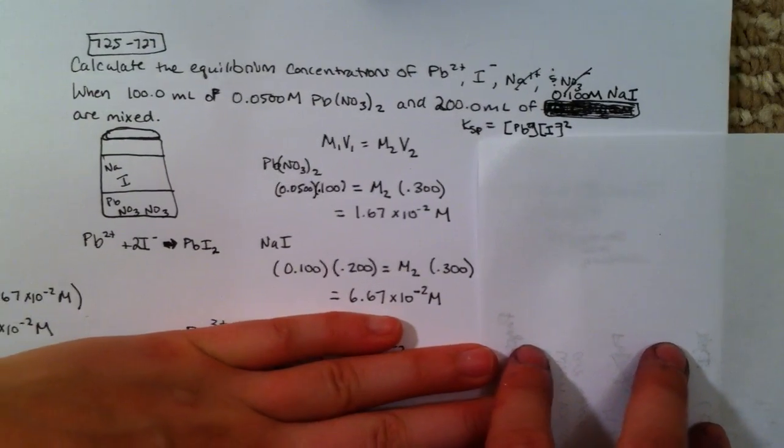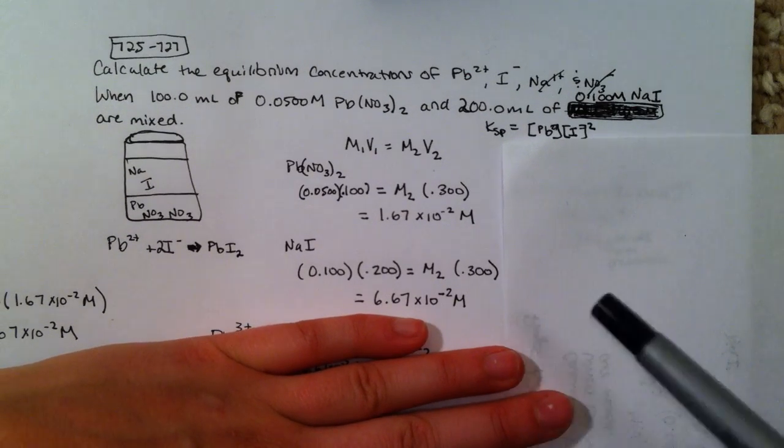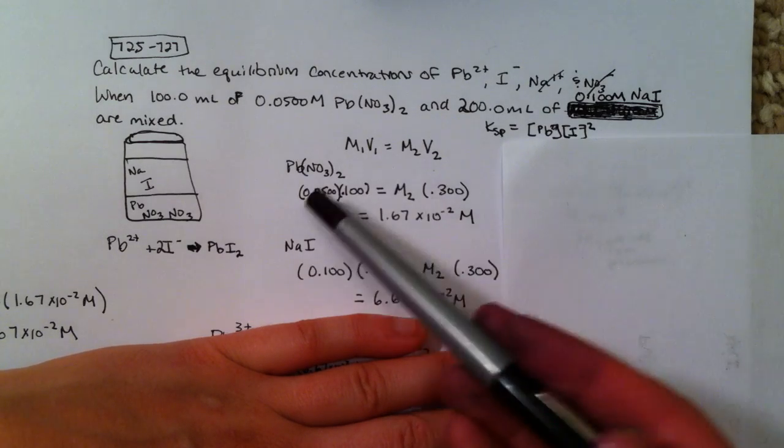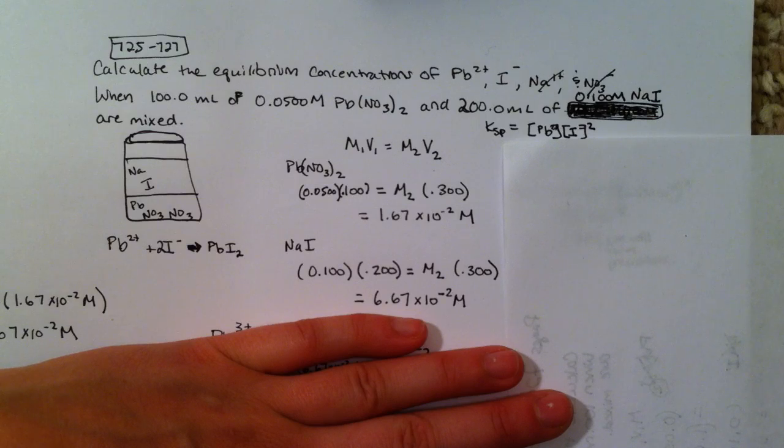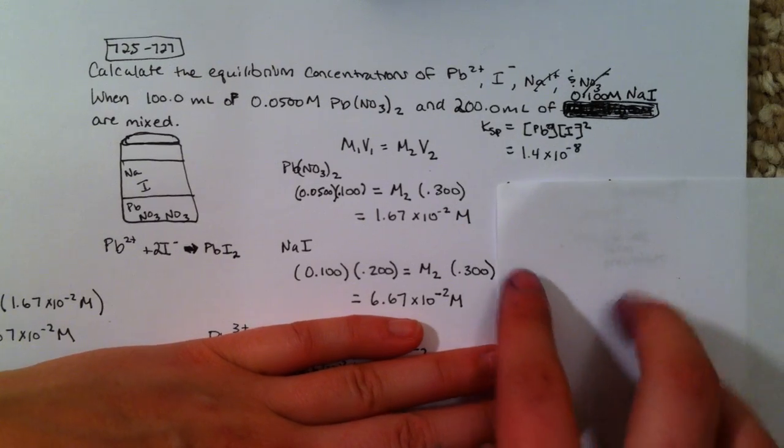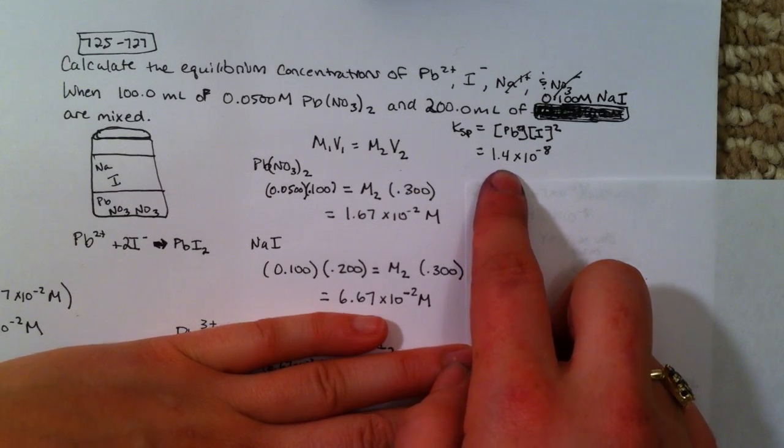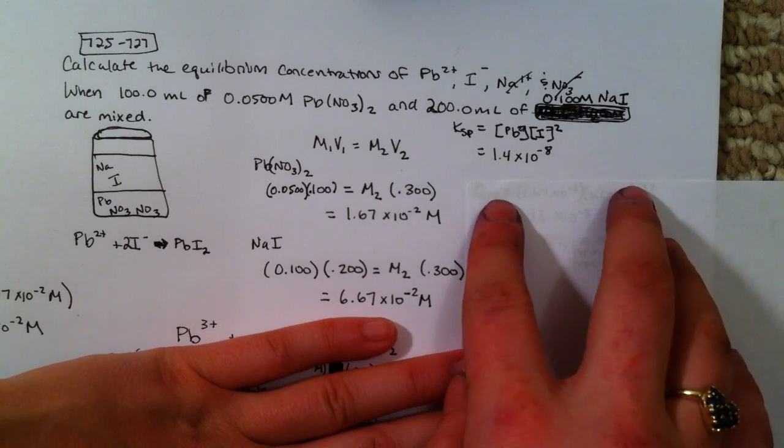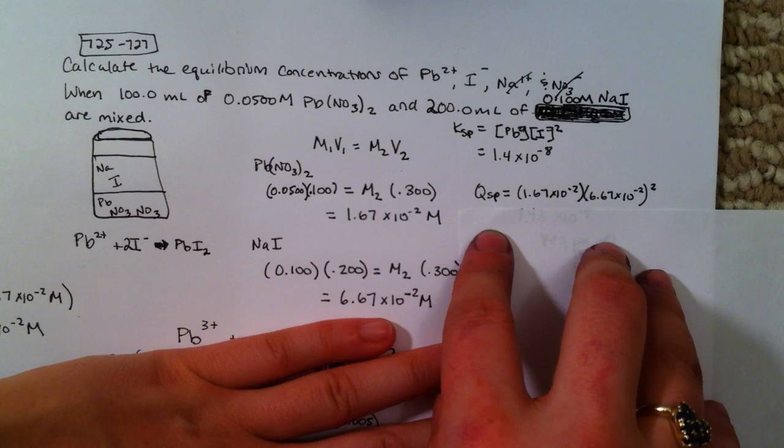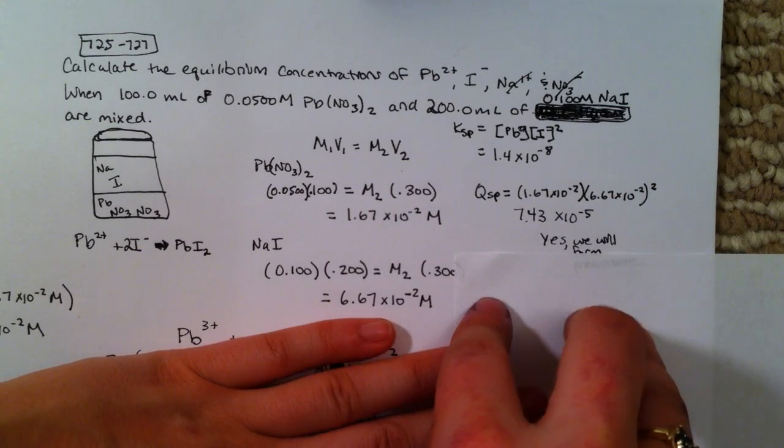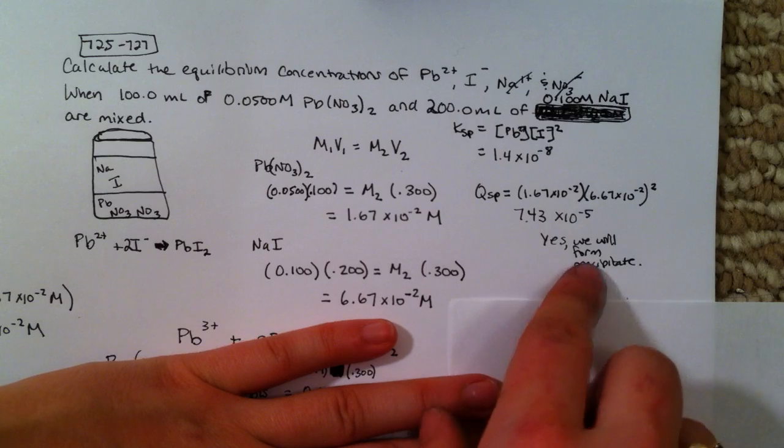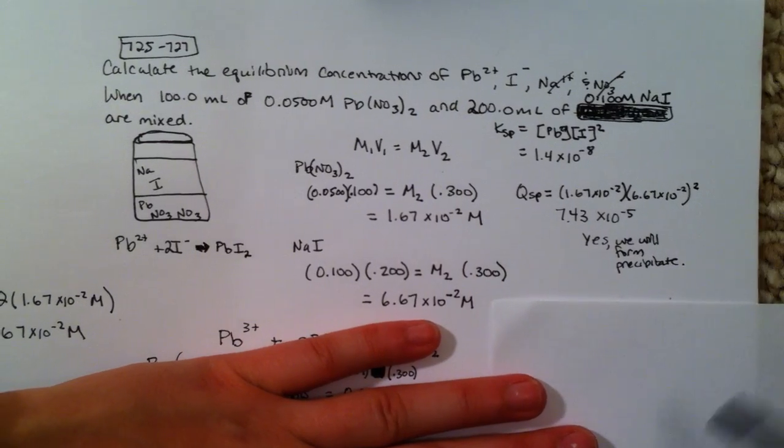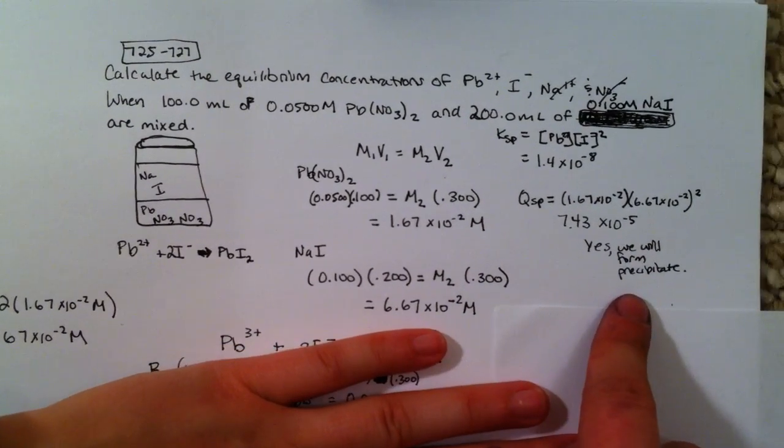Now, I have to see am I going to actually form any solid or are these ions just going to be in the water and then I'm done. So I'm going to do a Q. Here's the KSP and I know that it's equal to 1.4 times 10 to the negative 8th because it's in my book. When I do my Q, I find yes, we will form some precipitate. I bet you could have guessed that because otherwise we wouldn't have to do this problem.